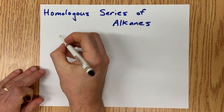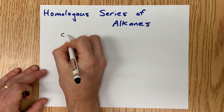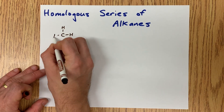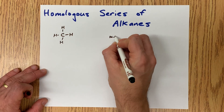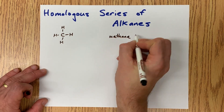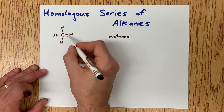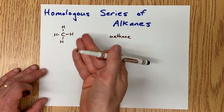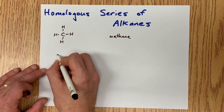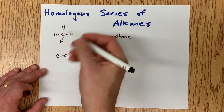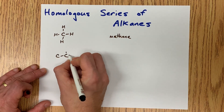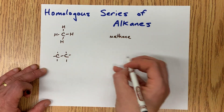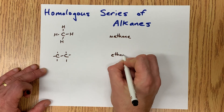The homologous series of alkanes begins with the simplest alkane, which is a one-carbon chain — methane. Alkanes end with 'ane.' What makes a homologous series is sequentially adding more and more carbons to your chain. The next member of the series is a two-carbon chain, single-bonded, because that's what makes something an alkane, and this is called ethane.